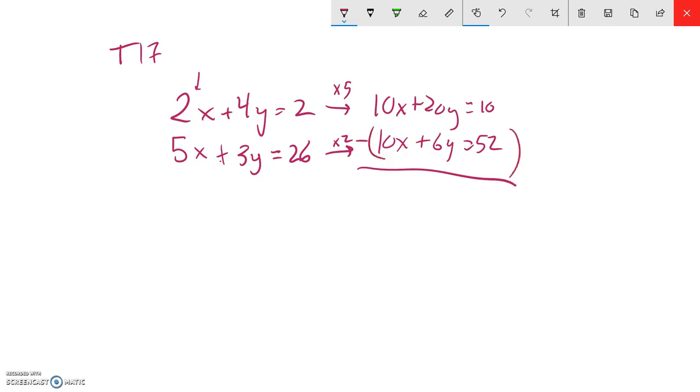Great, and now I'm just going to subtract. So 10x minus 10x is 0. I wanted that to happen, I wanted x to go out. So 20y minus 6y - I'm subtracting everything - it's 14y. And then 10 minus 52, that's negative 42.